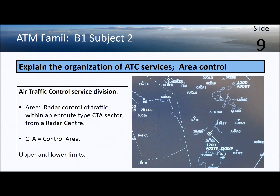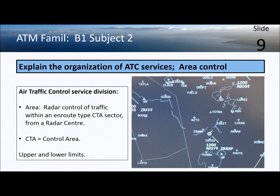The area control or en route sector has an upper and a lower limit. It sits above the approach departure TMA zones and controls aircraft as they climb to their cruise altitude, fly over long distances, and then begin their descent.